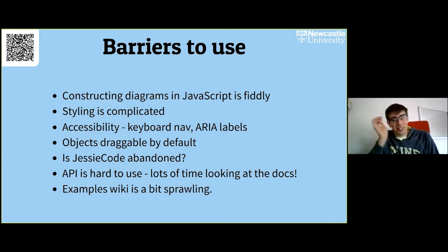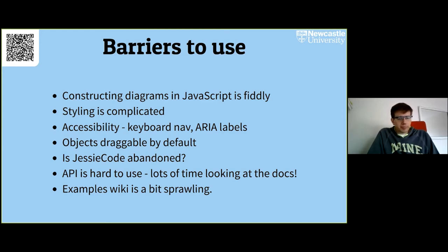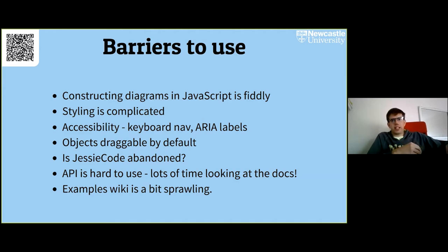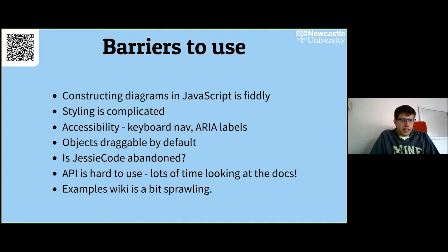Here's my longer list of barriers. Constructing diagrams in JavaScript is difficult — JavaScript is a generic language and the syntax isn't great for producing geometrical diagrams. I know JSXGraph's JessieCode exists, but I'm not sure about its status and the documentation is quite bare. I've also found styling elements in JSXGraph quite tricky — I'd really like to write something like a stylesheet that applies through the diagram, rather than having to set stroke color, highlight color, and everything on each individual object.